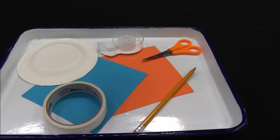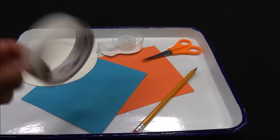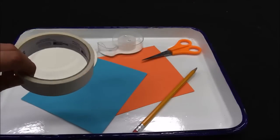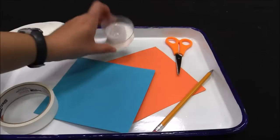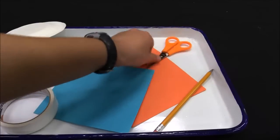All right Eco Explorers, to make your sundial, you're gonna need something circular to trace, a paper plate, paper, some tape, scissors, and a pencil.